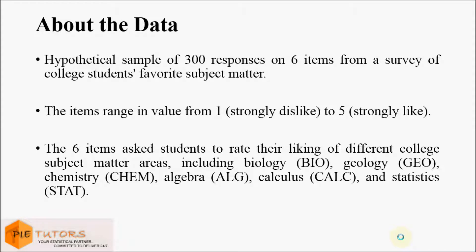The dataset in this example contains hypothetical responses from 200 students on six items from a survey on school students. The six items ask students to rate their liking for different subjects including biology, geology, chemistry, algebra, calculus and statistics. The value of each of these items ranges from one, which shows strong dislike for the subject, to five, which shows strong liking for the subject.